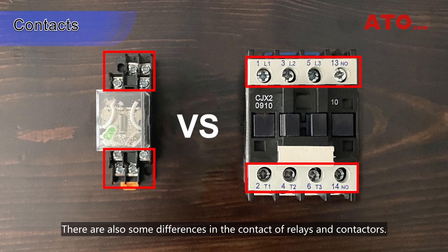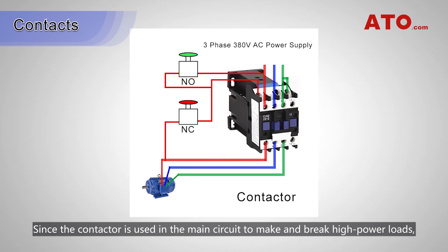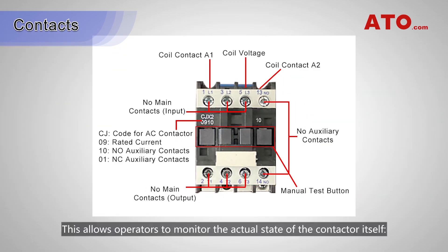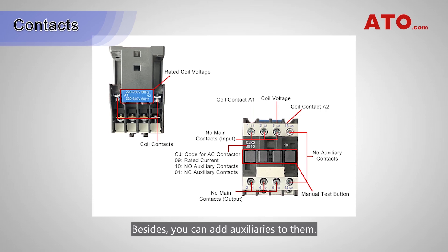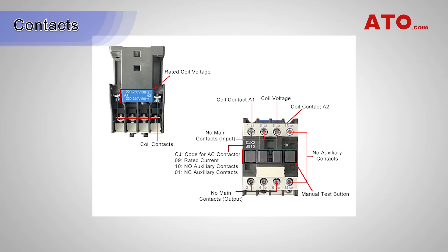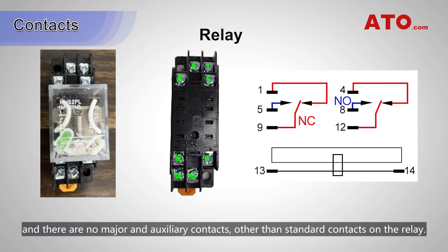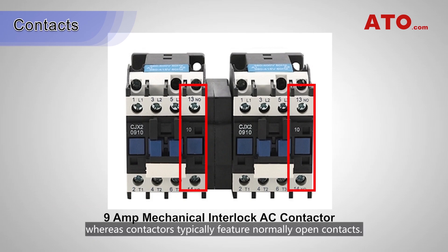There are also some differences in the contacts of relays and contactors. Since the contactor is used in a main circuit to make and break high power loads, it adopts interlocking contacts. This allows operators to monitor the actual state of the contactor — whether it's open or closed — and you can add auxiliary contacts to them. The relay, by contrast, is used to amplify low voltage input signals to control larger voltage signals, and there are no major and auxiliary contacts, only standard contacts on a relay. Most relays come with both normally open and normally closed contact configurations, whereas contactors typically feature normally open contacts.